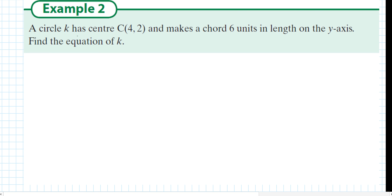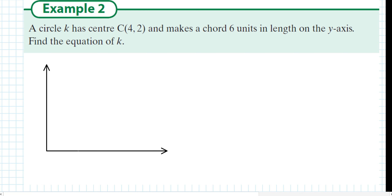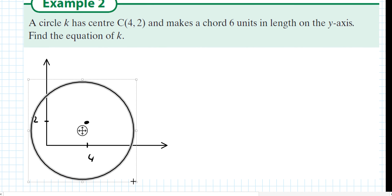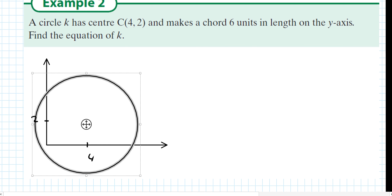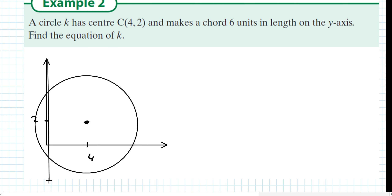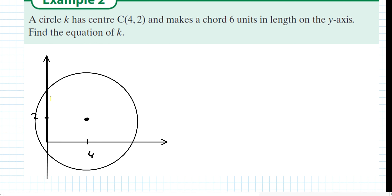Next question. Circle k has center 4, 2. A little sketch can help us - 4 on the x-axis, 2 on the y-axis, so its center is here. It makes a chord six units in length on the y-axis, so it hits the y-axis in two locations forming a chord that is six units long.